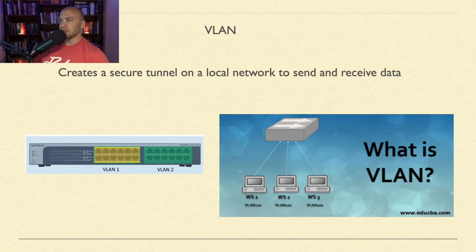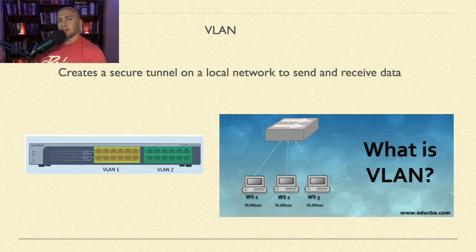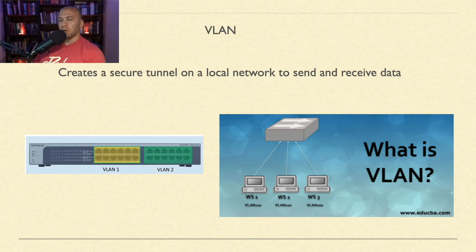A VLAN — Virtual Local Area Network — creates a segmented area within a local network where specific machines can communicate with one another. You can have multiple VLANs on a single switch. For example, VLAN 1 communicates only within VLAN 1, and VLAN 2 communicates within itself — they remain isolated from each other.